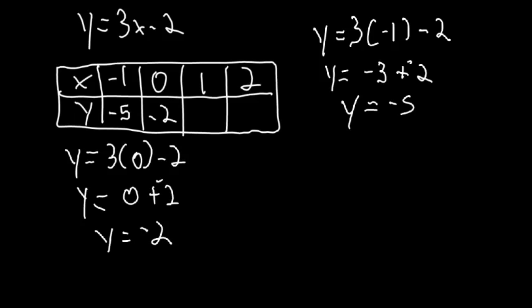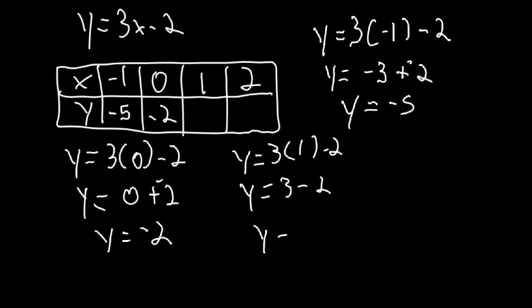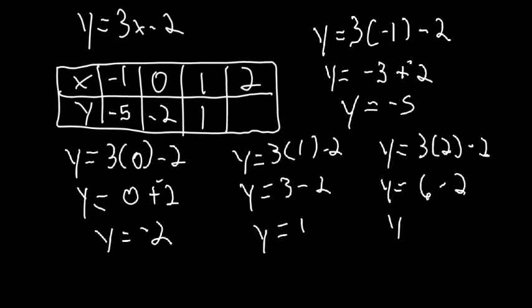Next, y equals 3 times 1 minus 2. That's 3 minus 2, so y equals 1. Then our last one: y equals 3 times 2 minus 2. That's 6 minus 2, so y equals 4. Now we have a completed function table.